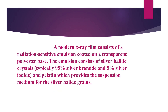A modern x-ray film consists of a radiation-sensitive emulsion coated on a transparent polyester base. The emulsion consists of silver halide crystals — typically 95% silver bromide and 5% silver iodide — and gelatin, which provides the suspension medium for the silver halide grains. X-ray films are double coated, while single-coated film is used in mammography, CT, and MRI.